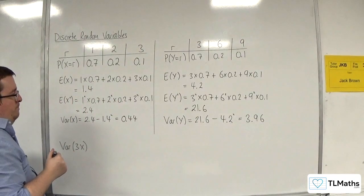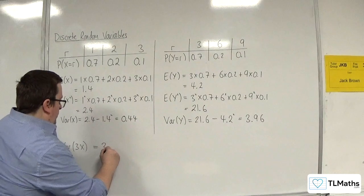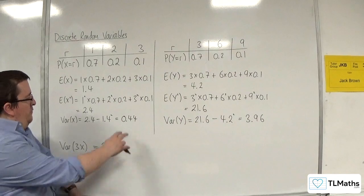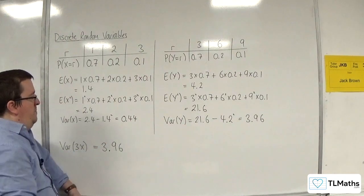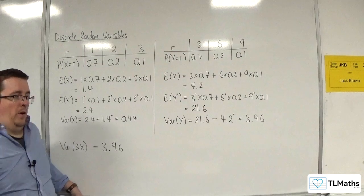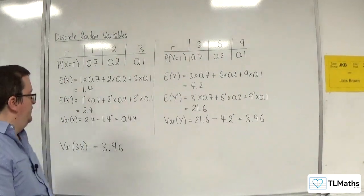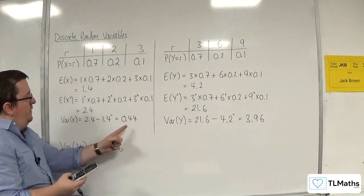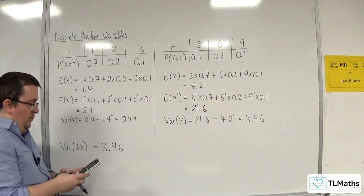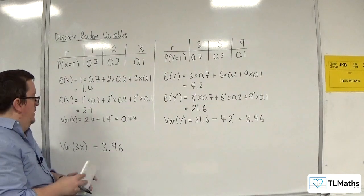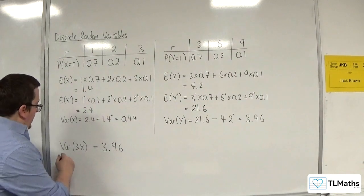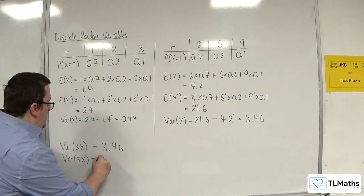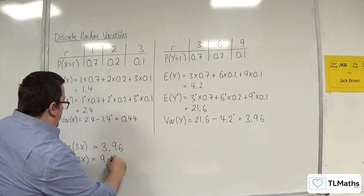So I'm getting 3.96 for this. So from 0.44 to 3.96, can we spot what's happened? If we do 3.96 divided by 0.44, we get 9. So what we're seeing is that var of 3x is equal to 9 lots of var of x.